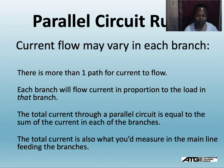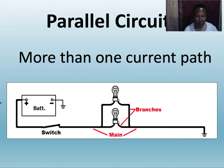The total current through a parallel circuit is equal to the sum of the current in each of the branches. The total current is also what you measure in the main line feeding the branches. Each leg will draw a certain amount of current — let's say this one draws four amps and this one draws two amps; the total current leaving the main line is six amps.